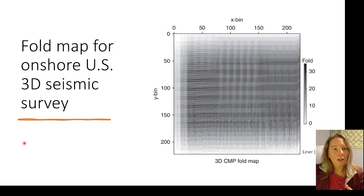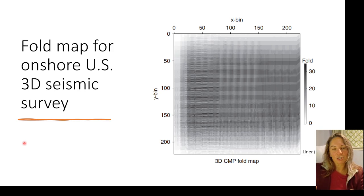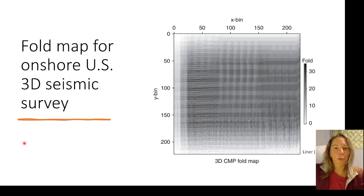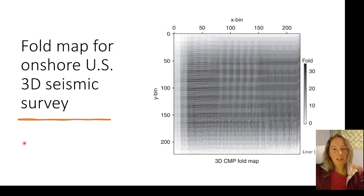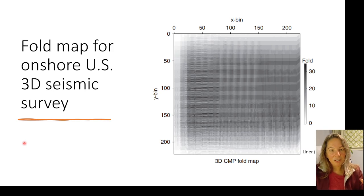This is an example of an image showing actual fold coverage from a land survey. You can see how the fold builds up from the edges — where it's lighter, meaning less fold — all the way into the center where it gets darker and you have higher fold. Areas of different fold will have different signal-to-noise ratios, and that's something we have to keep in mind as we're interpreting. Lower fold areas may mean less statistical noise reduction in the stacking process, making it harder to interpret subtle features.